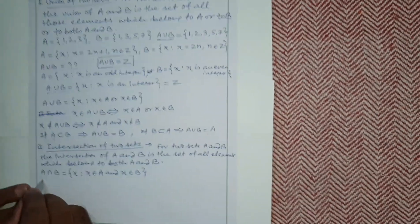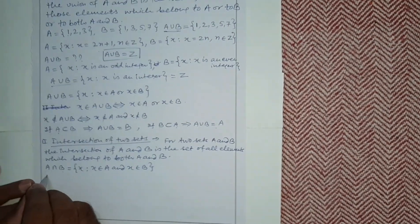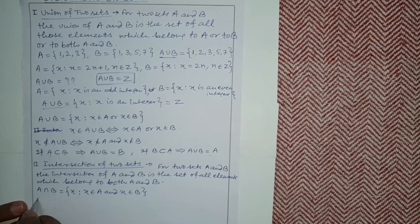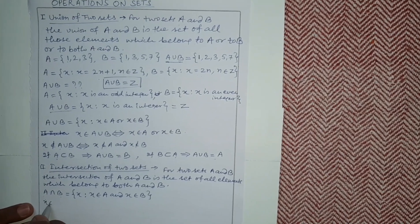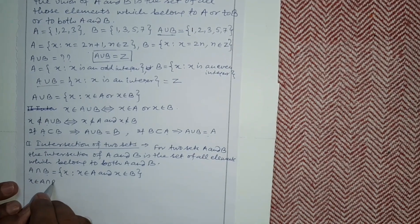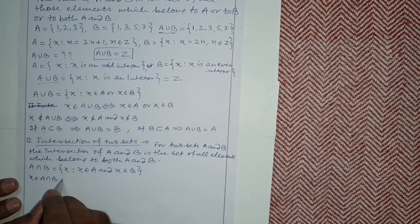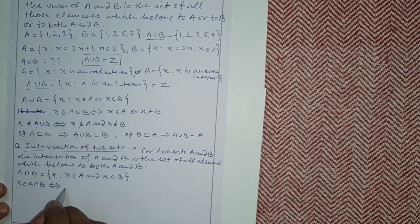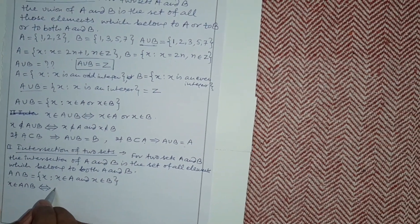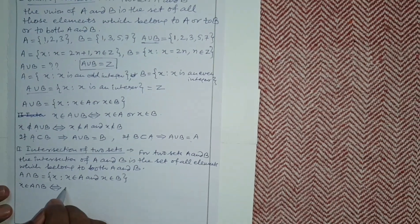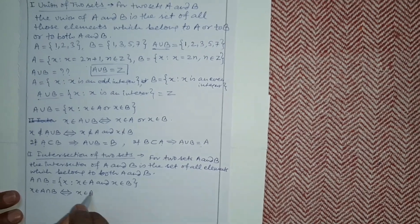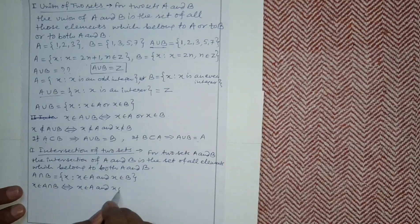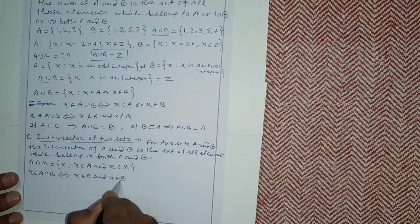The first conclusion about intersection: x belongs to A intersection B if and only if x belongs to A and x belongs to B — meaning x must belong to both sets simultaneously.